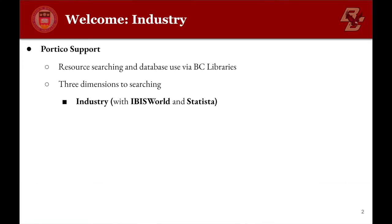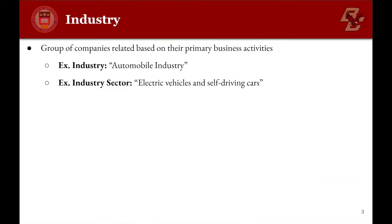We're going to look at this from three dimensions. First, industry. An industry is a group of companies that is related based on their primary business activities. The example here is the auto industry and the sector of electric vehicles and self-driving cars.